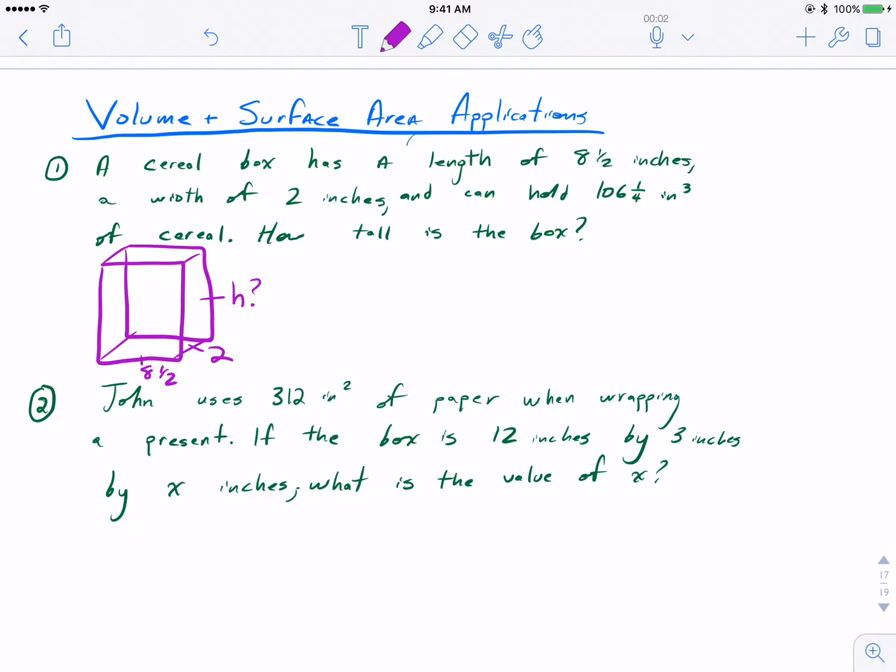The volume formula for a rectangular prism is length times width times height. We know what the volume is, it's 106 and a fourth. We know the length and width, and we ultimately want to solve for h. So this basically turns into an equation.